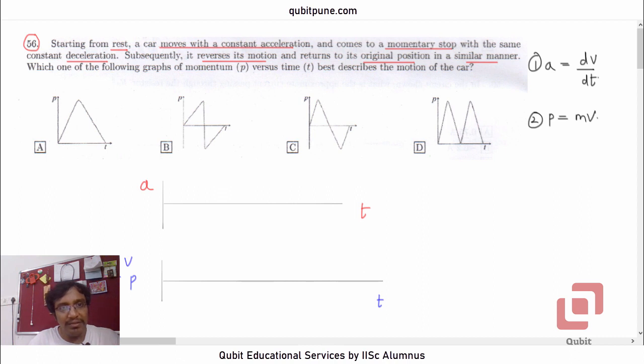Let's start. They say starting from rest, a car moves with a constant acceleration. So constant acceleration means on the A-T diagram, it is going to be represented by a horizontal line. And this constant acceleration, if we consider it to be positive, what does it mean? It means that the velocity will be an increasing function of time. Yes, velocity is an increasing function of time, because its derivative is positive.